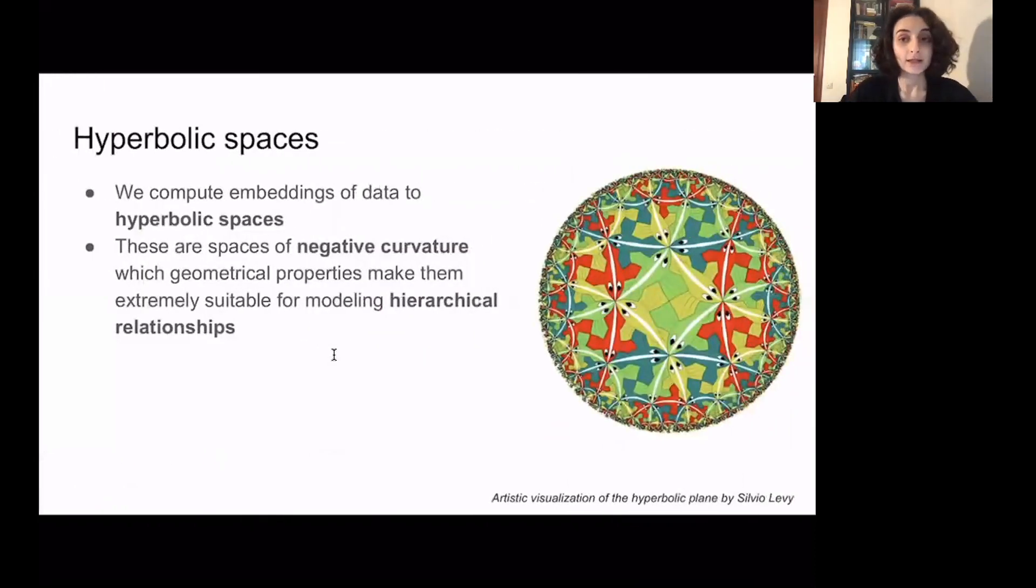Basically hyperbolic space is a space of constant negative curvature. For example, Euclidean space has zero curvature and spherical space has positive curvature. Apparently this property of negative curvature makes hyperbolic spaces attractive for embeddings of data with hidden hierarchy.